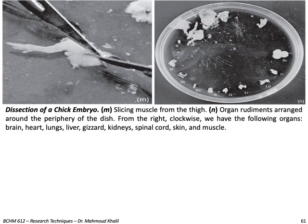After that, you slice muscles from the thigh. In figure N, organ rudiments are arranged around the periphery of the dish. From the right clockwise, the organs are arranged in the sequence they were dissected: brain, heart, lungs, liver, and so on.